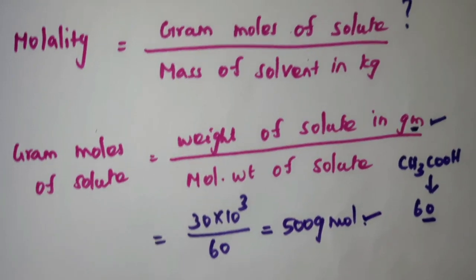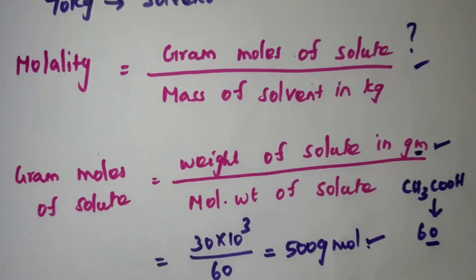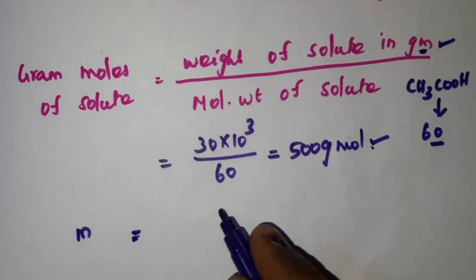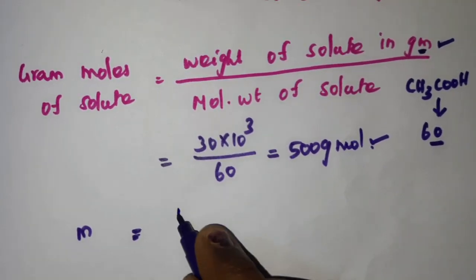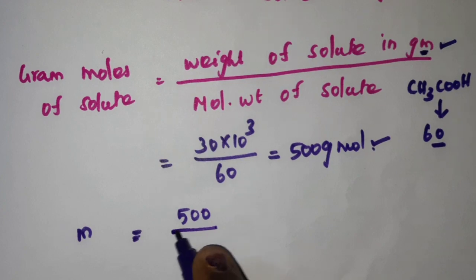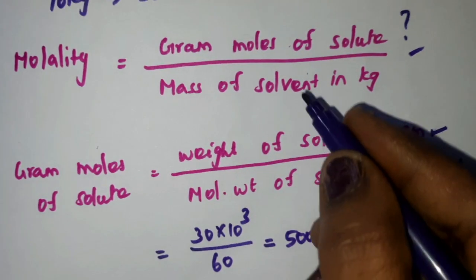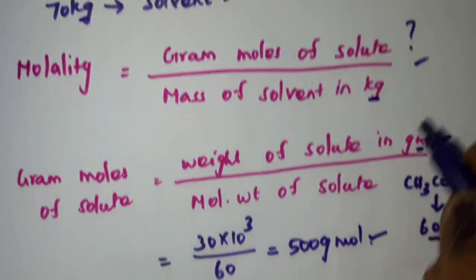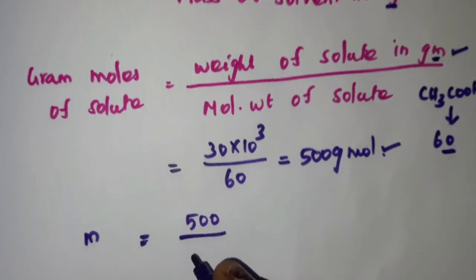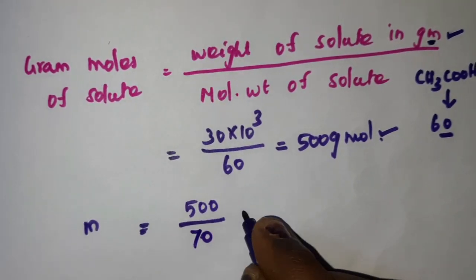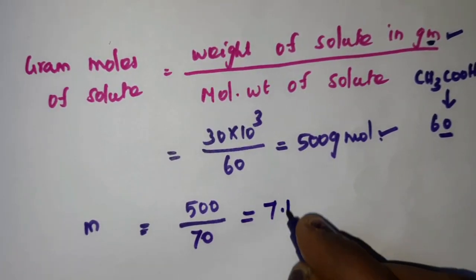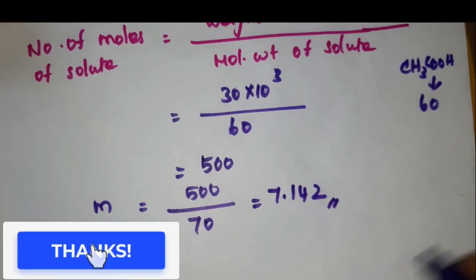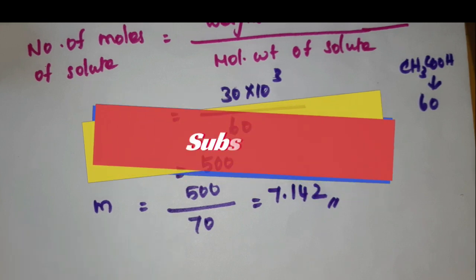Substituting into the molality equation: molality m equals gram moles of solute divided by mass of solvent in kg. Gram moles of solute is 500, and mass of solvent is 70 kg. Molality equals 500 divided by 70, which equals 7.142. This is your molality. Thank you for watching. If you like these videos, please subscribe and share.